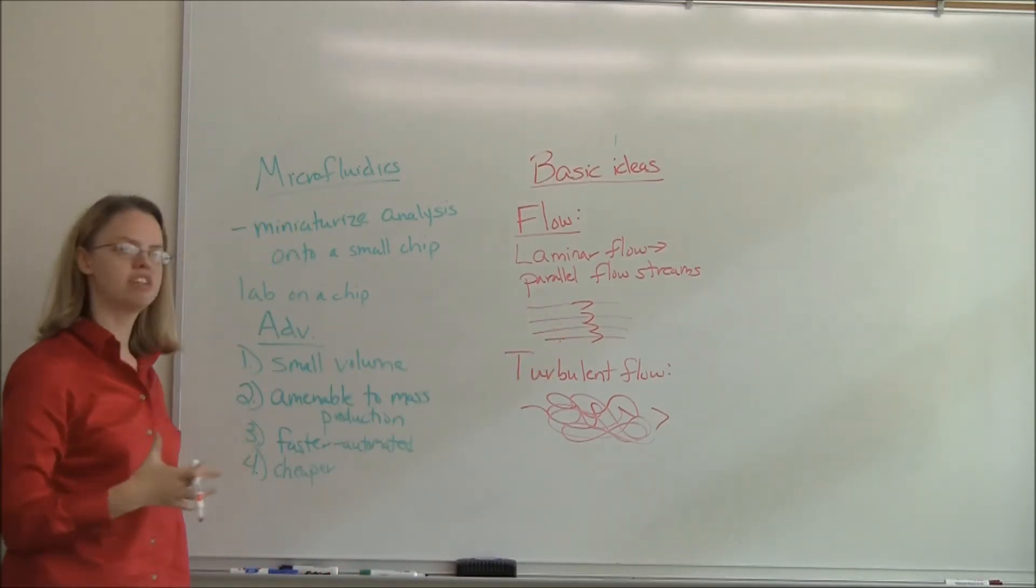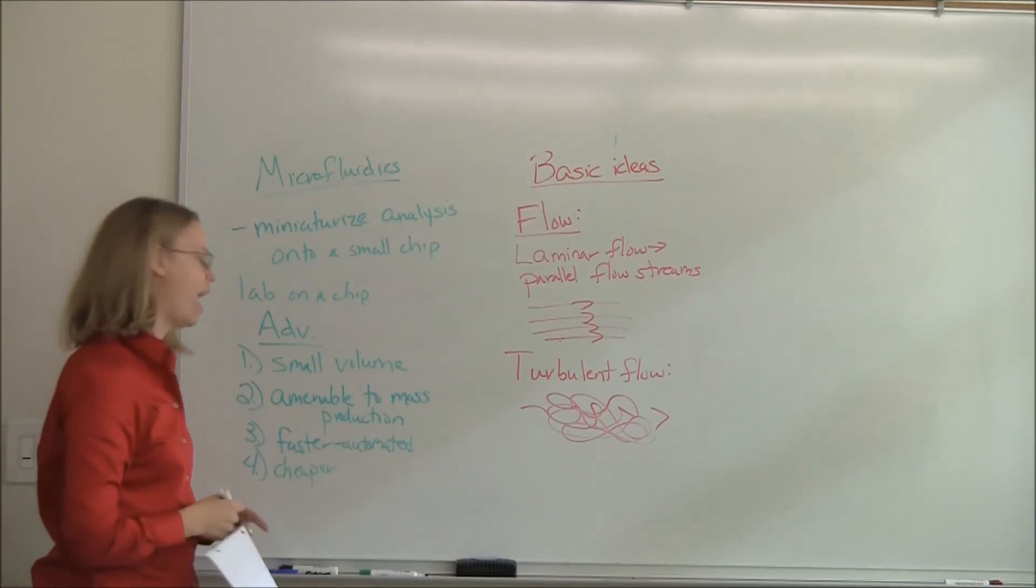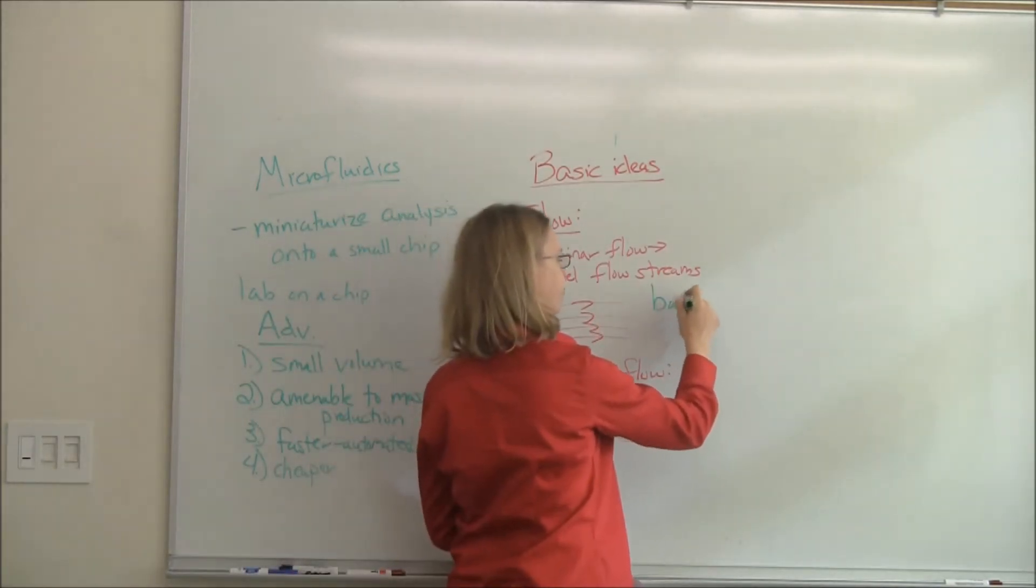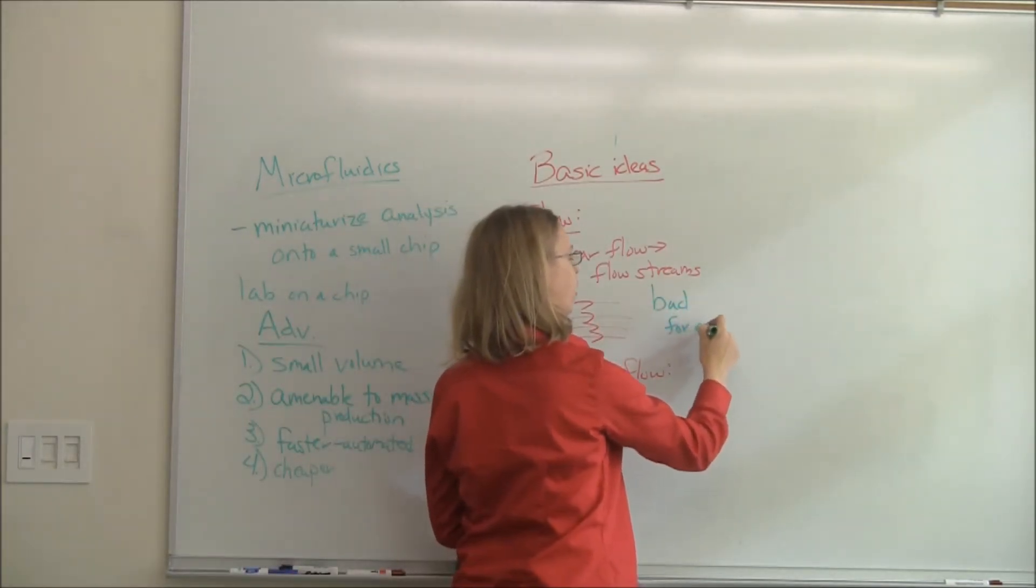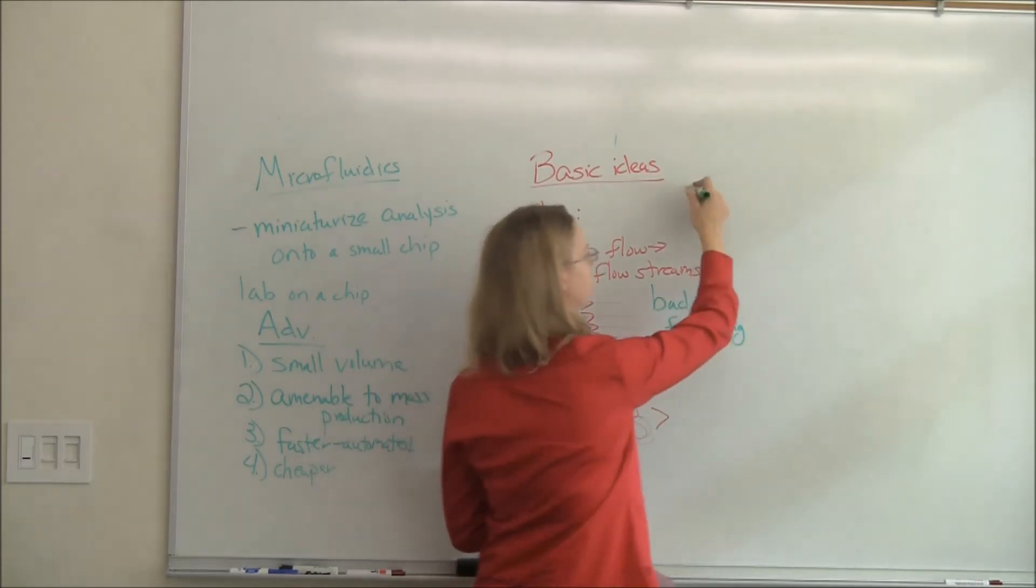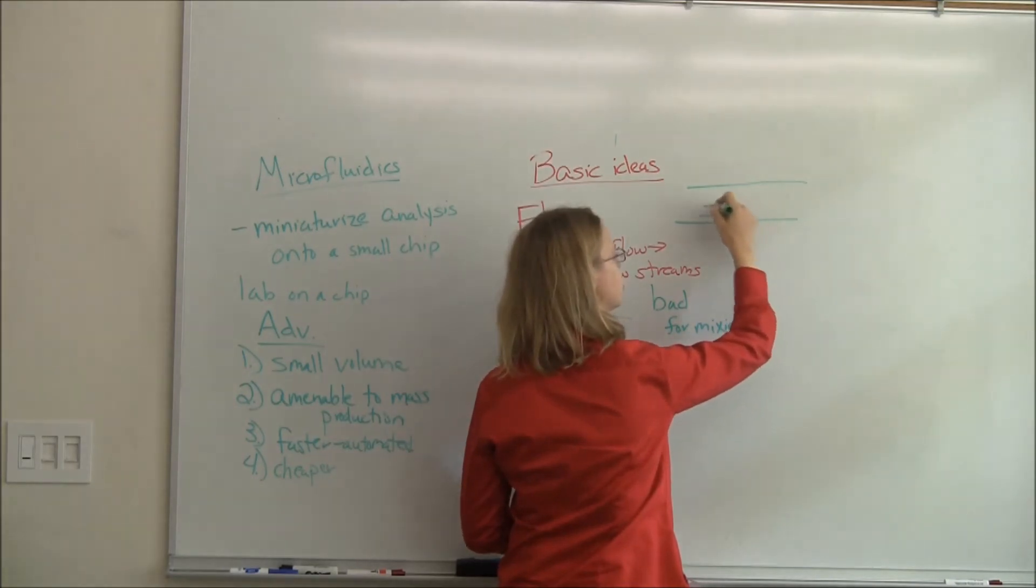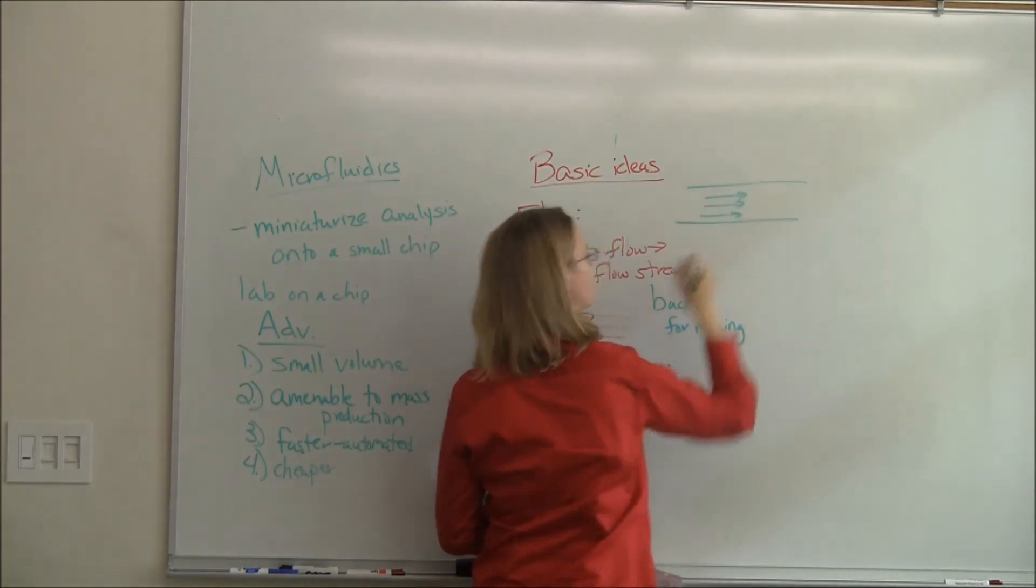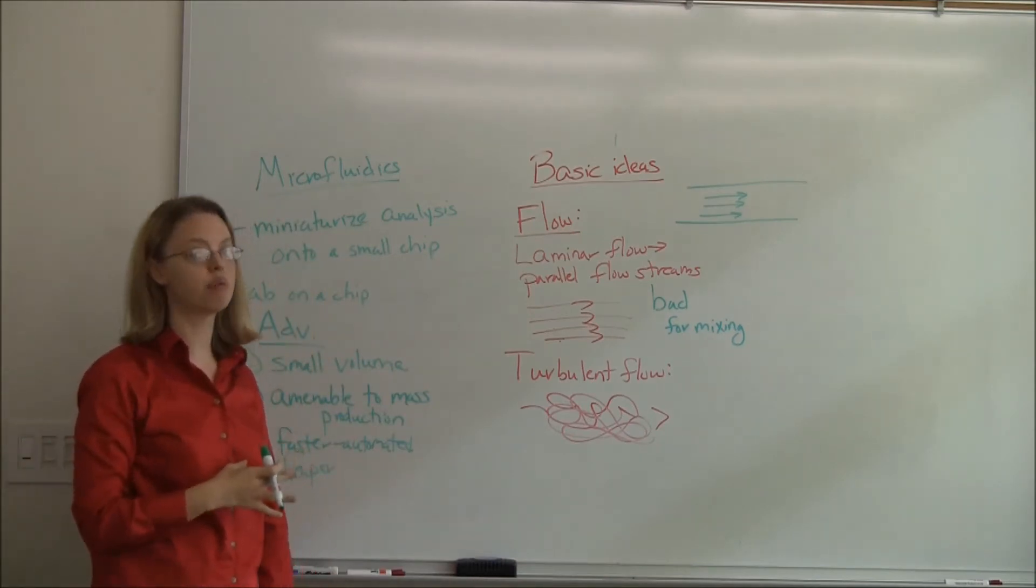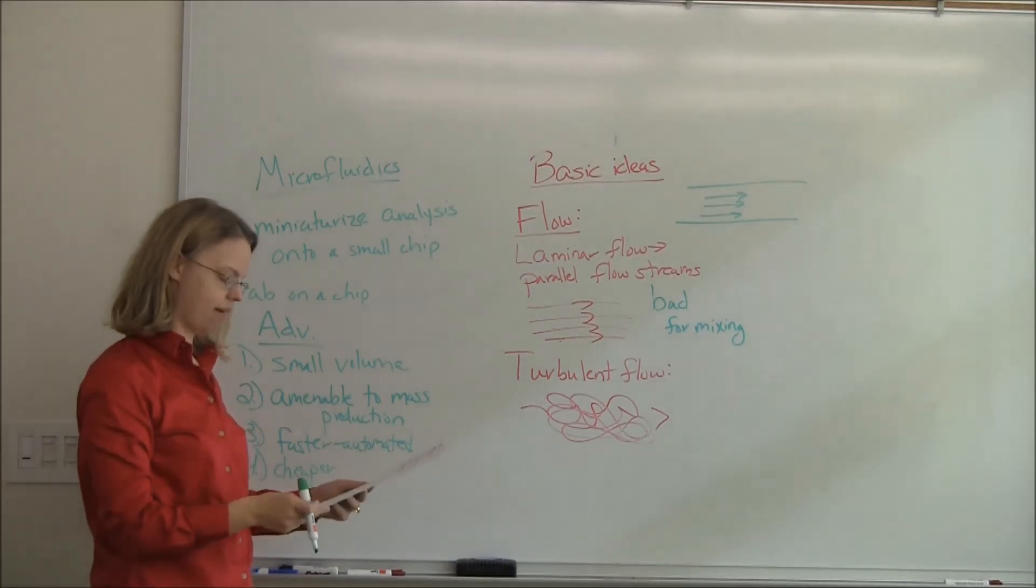And so we get laminar flow in a chip. And in some ways, this is good. Our stuff will flow. And in other ways, it's bad. It's bad for mixing. And so if we have a channel in our microfluidic channel, things will just tend to flow in a parallel fashion. So if I want it all to mix together, it won't. And we're going to look at some of that in the lab.